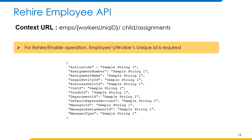The next one is RehireEmployee API. This API is used to enable an employee record. The HTTP method used for this API is PATCH. For the rehire API we need the employee's or worker's unique ID. The example request body includes action code, assignment number, assignment name, legal entity ID, business unit ID, job ID, grade ID, department ID, default expense account, manager ID, manager assignment ID, and manager type.